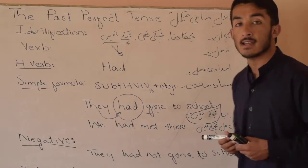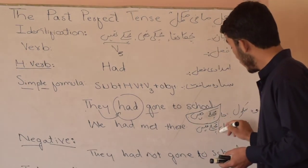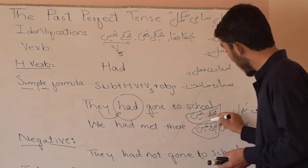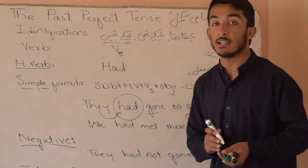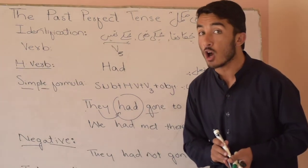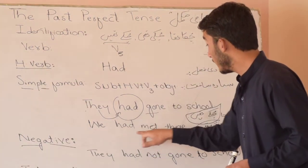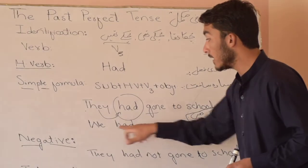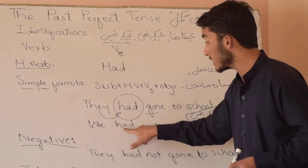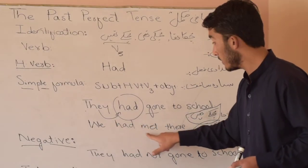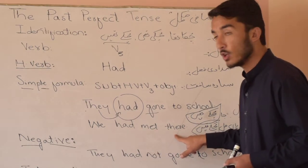The next sentence is 'hum waha mil chuke'. This also ends with 'chuke', which means the sentence belongs to past perfect tense. We had met there. Subject, helping verb, third form of the verb, then the object.